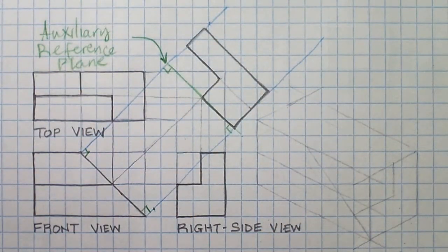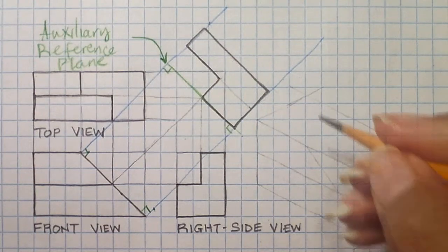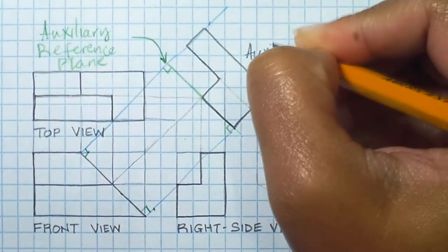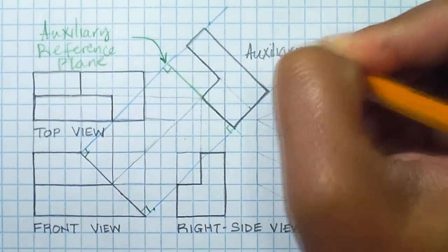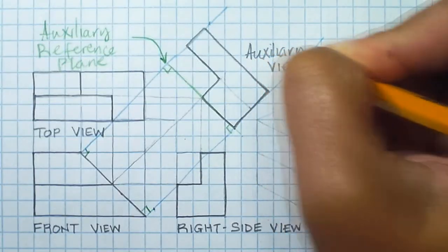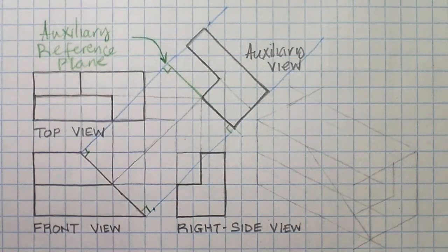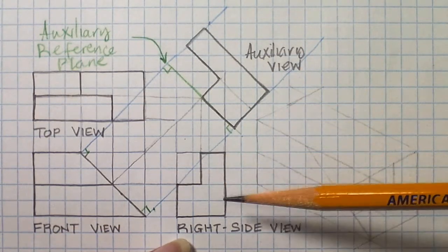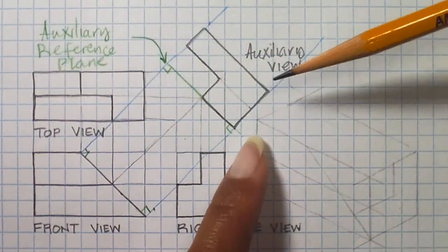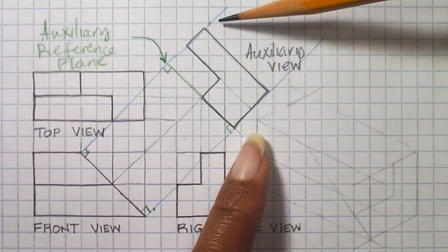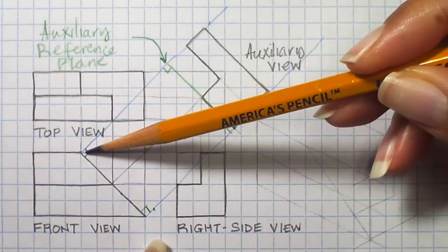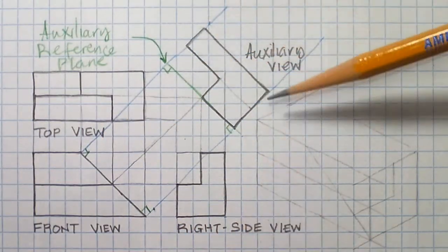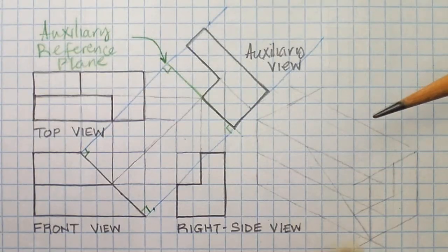And that is our auxiliary view. Just pay attention to the fact that the shape does not change - it's just an elongated version since it's giving us the true shape or the true size of that particular surface. Now we're going to look